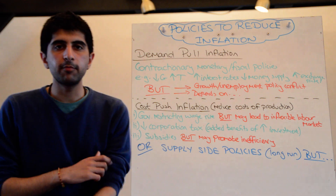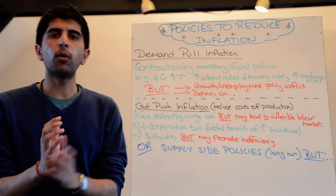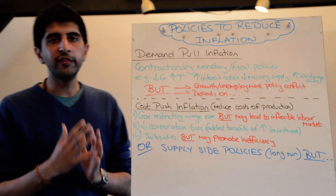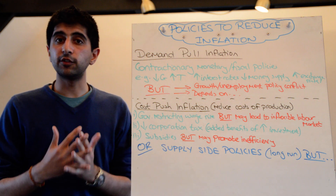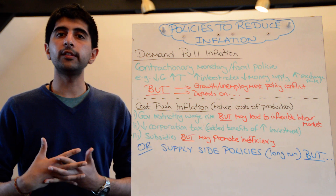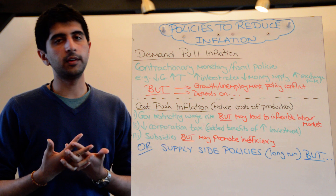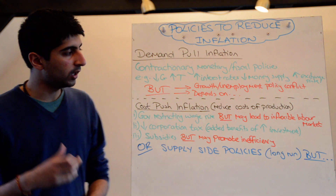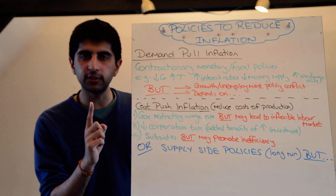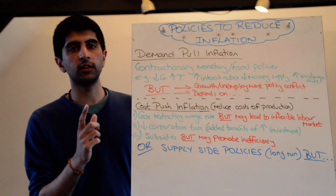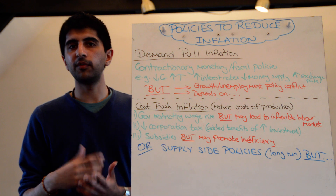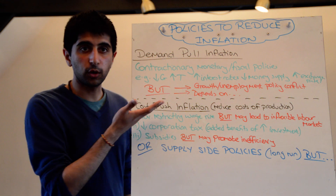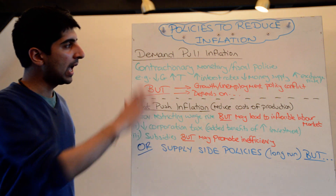We all understand that the government has a very important inflation target. So if inflation is going out of control, what policies do the government have to actually reduce inflation? First of all, it needs to know what type of inflation is being caused — is it demand-pull or is it cost-push? Then it can act.